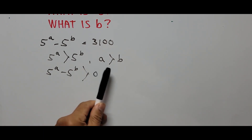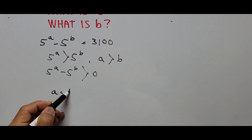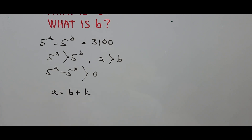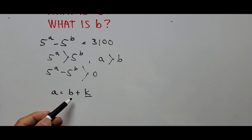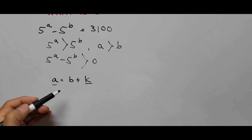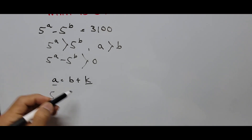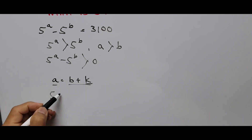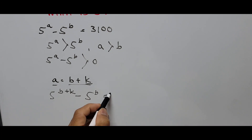Since A is greater than B, we can represent A with respect to B as A equals B plus K, where K represents the value added to B to equal A. By adding K to B, this completes the relationship equaling the value of A. Now we start substituting the value of A with respect to B in the original equation: 5 raised to B plus K minus 5 raised to B equals 3100.